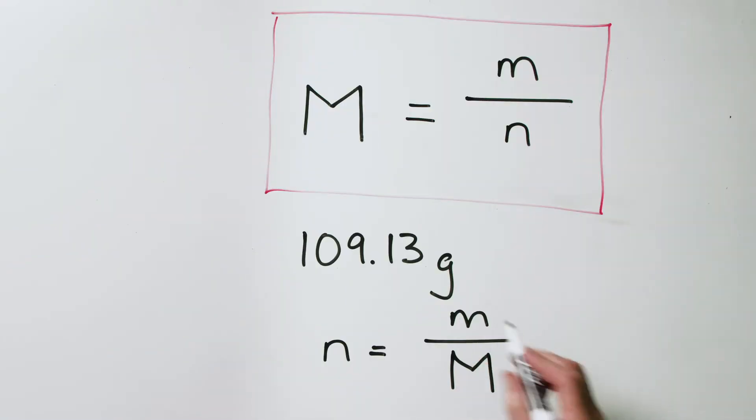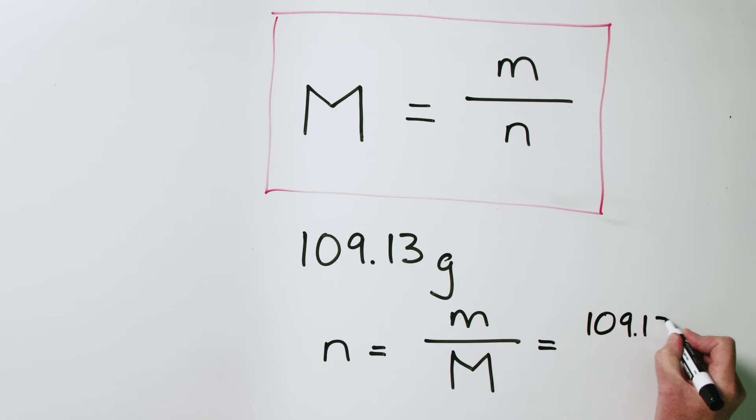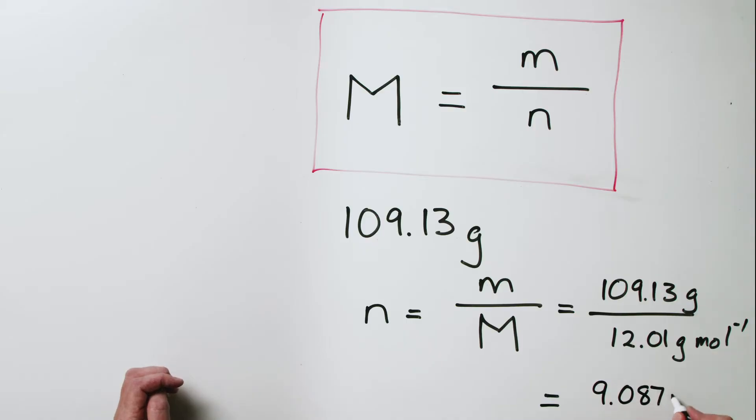The mass of this diamond is 109.13 grams. The molar mass is the molar mass of carbon. We go to our periodic table and find that's 12.01 grams per mole. We do our calculation and find this comes out to 9.087 moles.